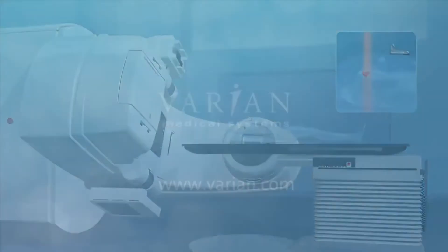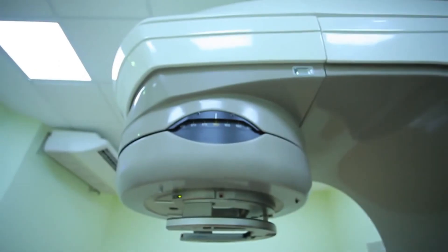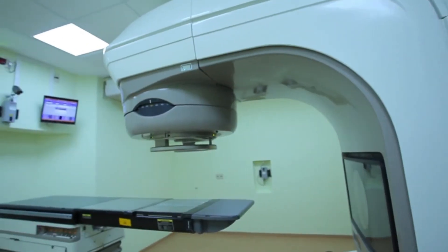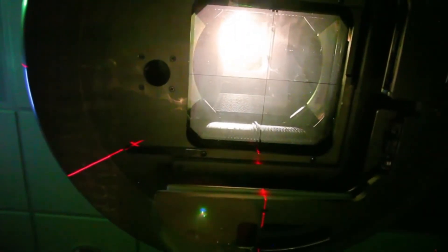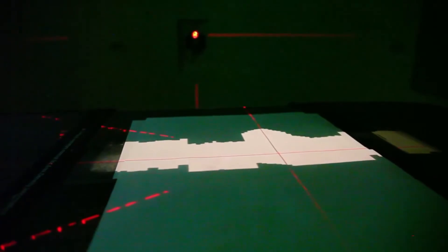And the fourth type of LINAC is stereotactic radiosurgery, SRS, and stereotactic body radiotherapy, SBRT. Stereotactic radiosurgery is a non-surgical radiation therapy used to treat functional abnormalities in small tumors of the brain. It can deliver precisely targeted radiation in fewer high-dose treatments than traditional therapy, which can help preserve healthy tissue. When SRS is used to treat body tumors, it's called stereotactic body radiotherapy.